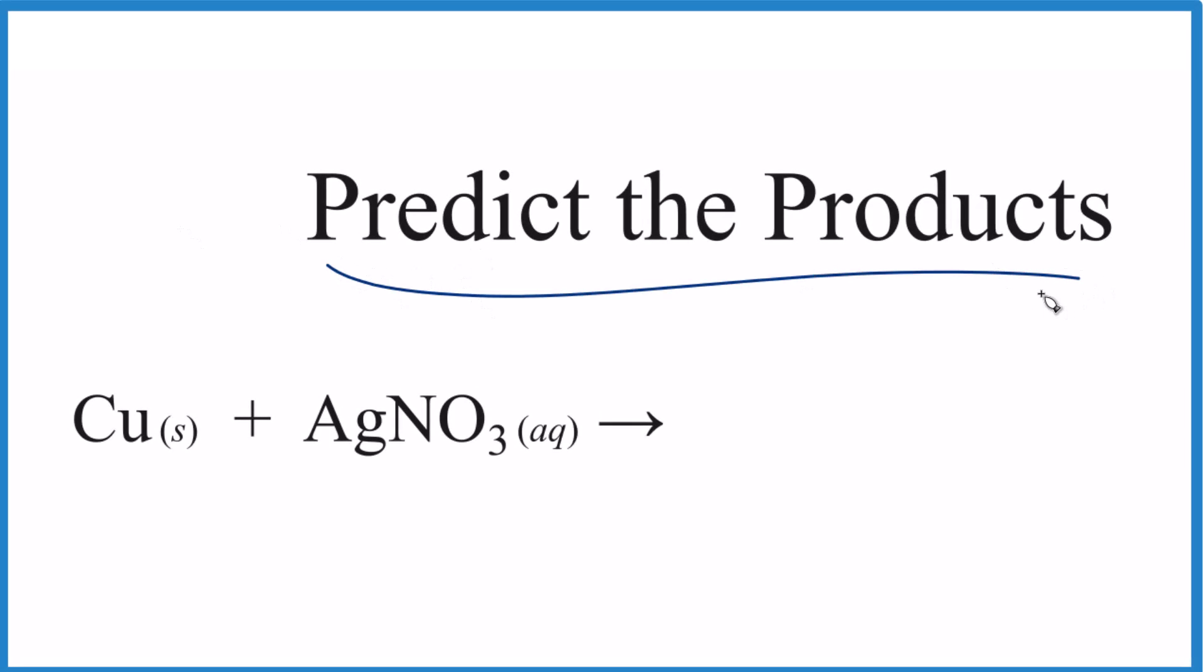Here's how you predict the products of a reaction between copper solid, copper metal, and silver nitrate AgNO3, which is aqueous, dissolved in water. To predict the products we need to figure out what type of reaction we have here.